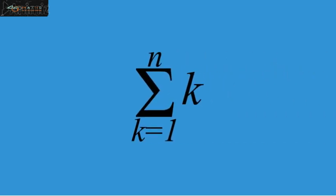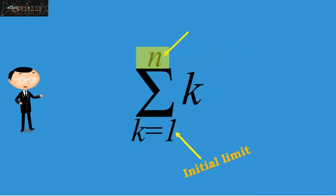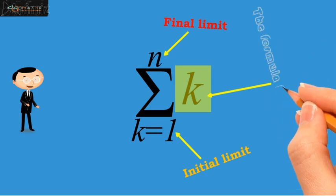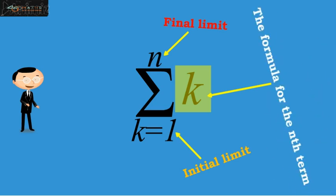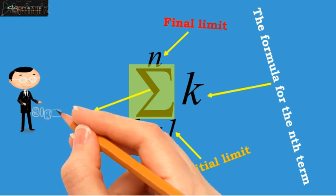In summation k equals 1 up to n, k, k equals 1 is called the initial limit, while n is called the final limit. The term k involved here is called the formula for the nth term, while the Greek letter sigma is used for the summation.